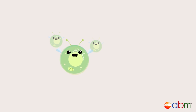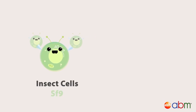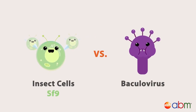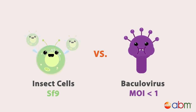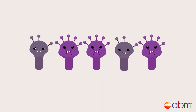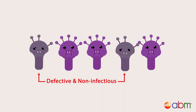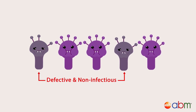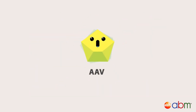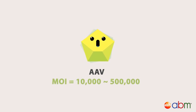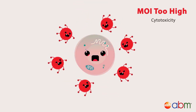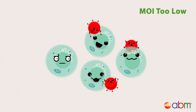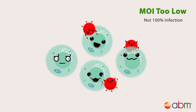On the other hand, when it comes to infecting insect cells such as SF9 cells with baculovirus for viral production, a low MOI of less than 1 is typically recommended. This is because passaging baculovirus at higher MOIs increases the possibility of transferring large amounts of defective, non-infectious viruses. AAV, in contrast, requires MOIs in the range of 10,000 to 500,000. Essentially, if the MOI is too high, it can cause cytotoxicity or other undesired effects. If the MOI is too low, it will not achieve 100% infection.